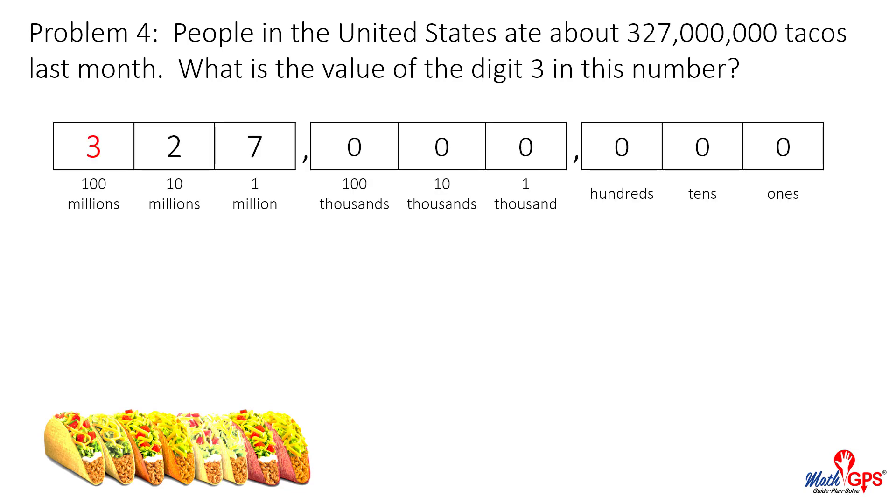The number is shown in a place value chart. What is the value of the digit three? The value of the digit three is three hundred million.